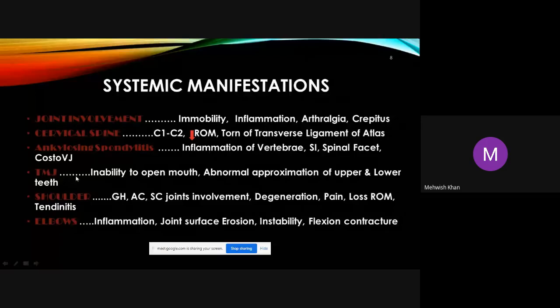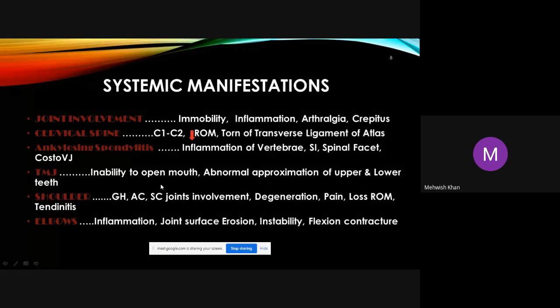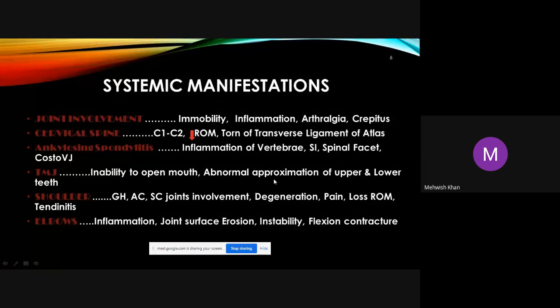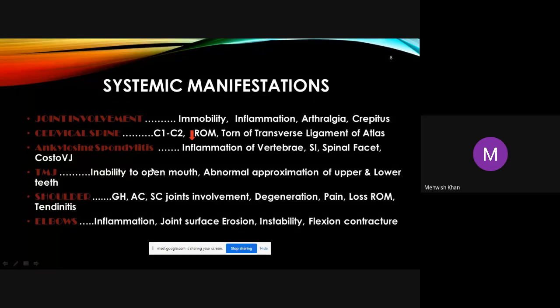The temporomandibular joint (TMJ) can also be involved in RA, causing inability to fully open the mouth and abnormal approximation of upper and lower teeth. The shoulder complex is affected too — the glenohumeral, acromioclavicular, and other shoulder joints undergo degenerative changes, causing pain, loss of range of motion, and functional limitation.